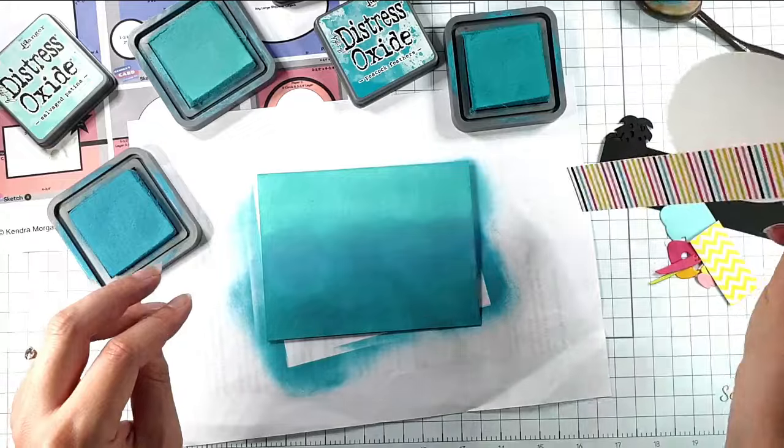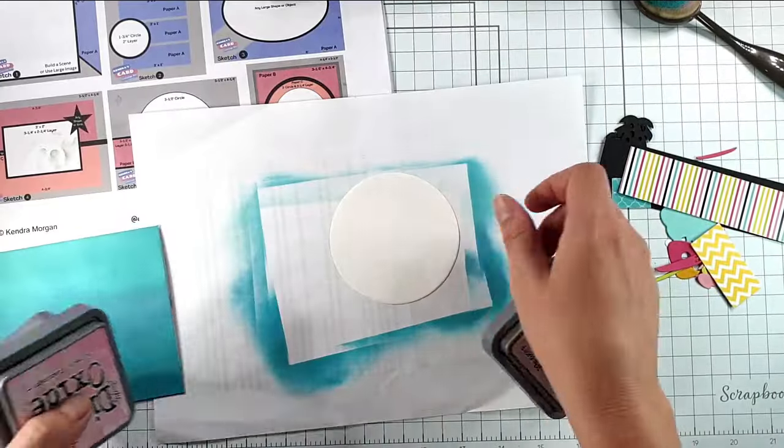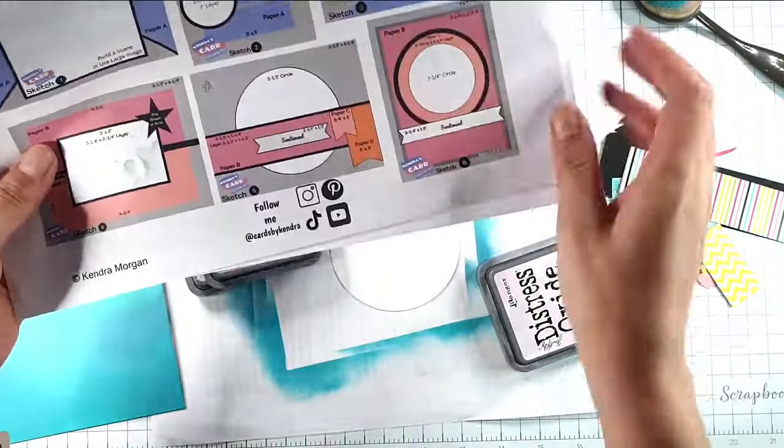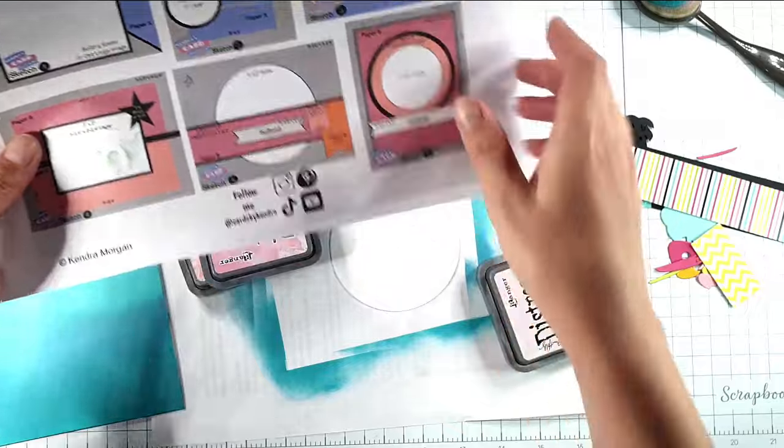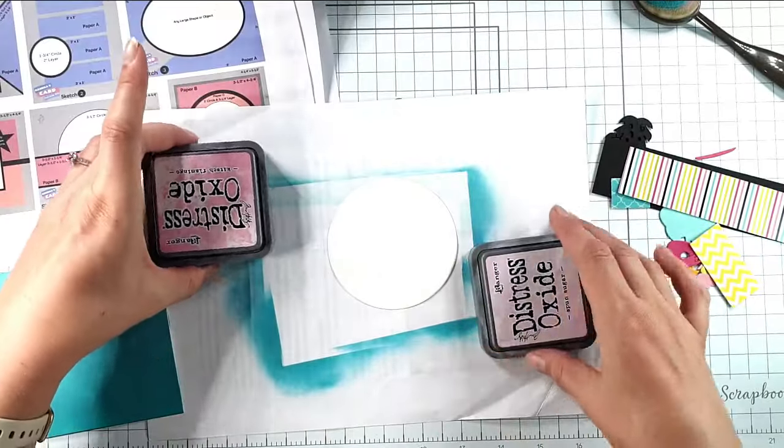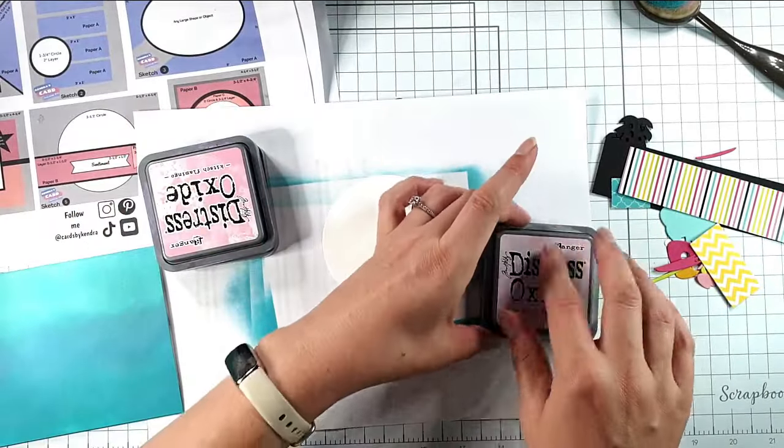So I'm happy with how that looks now. And then this is the three and a half inch circle that you can see here on the sketch. And I'm going to ink blend on this as well.